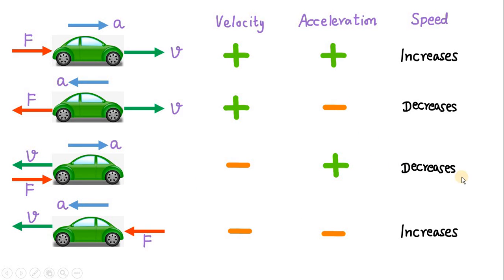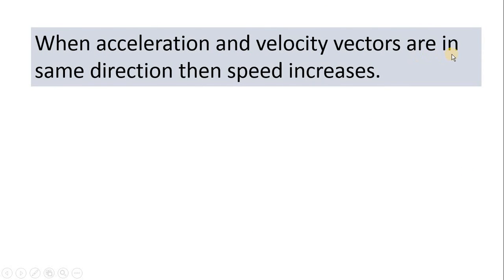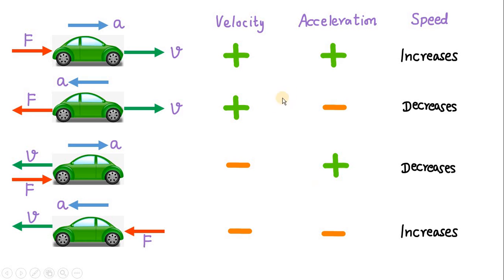Hence, we now conclude: when acceleration and velocity vectors are in the same direction, then speed increases. Going back to the previous page — when velocity and acceleration are both positive, the speed increases. And in the last case, when velocity and acceleration are both in the same direction — both negative, both in the leftward direction — speed increases. And when velocity and acceleration are opposite to each other — plus and minus, or minus and plus — then the speed decreases. So to summarize: whenever velocity and acceleration have the same sign — plus-plus or minus-minus — speed will increase, and whenever they have opposite signs, speed will decrease.